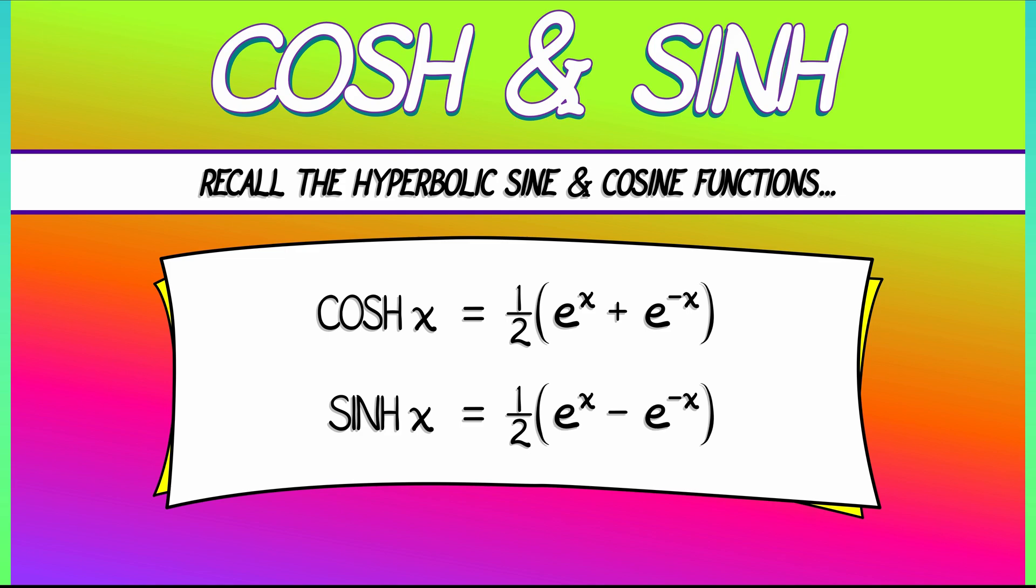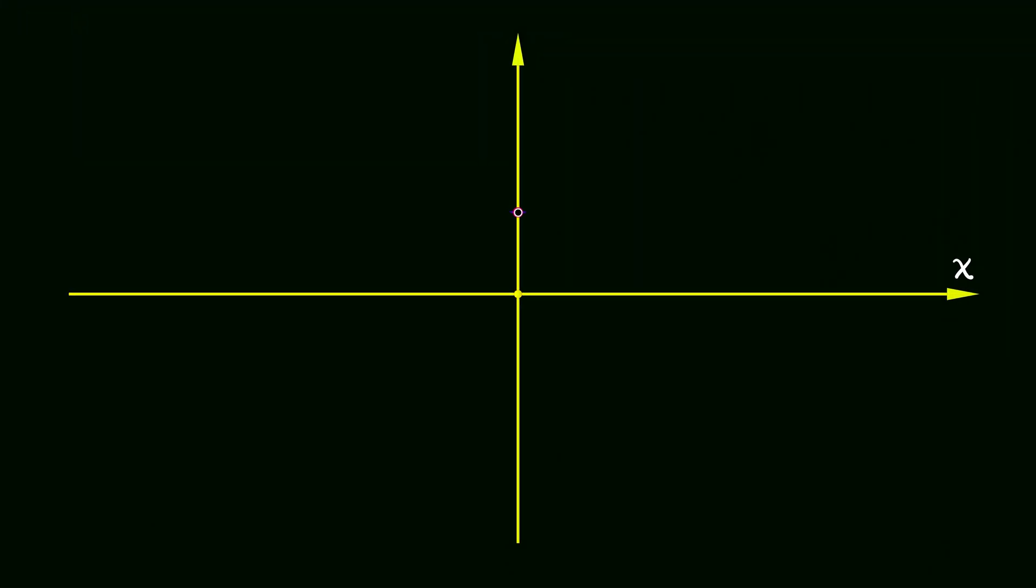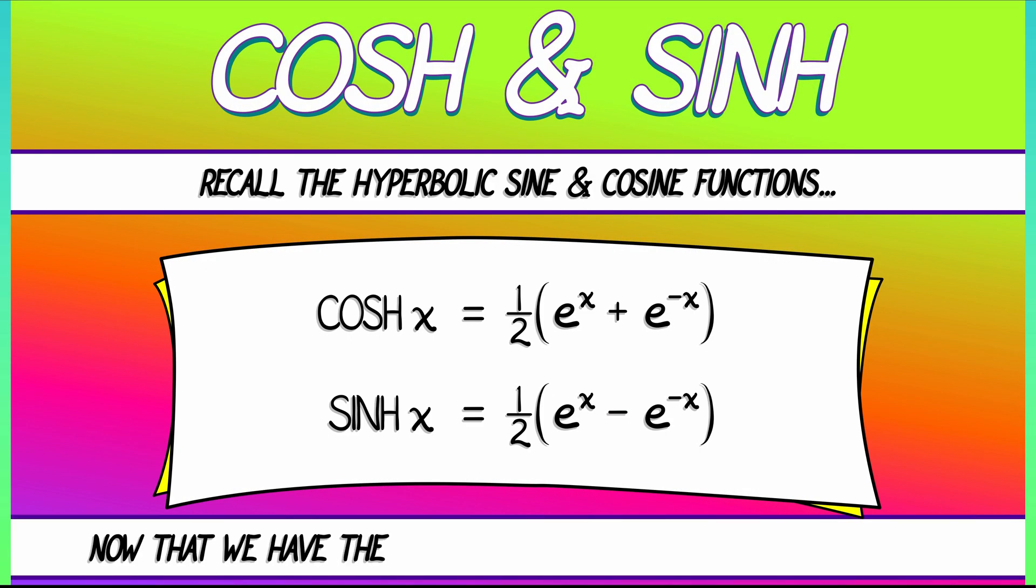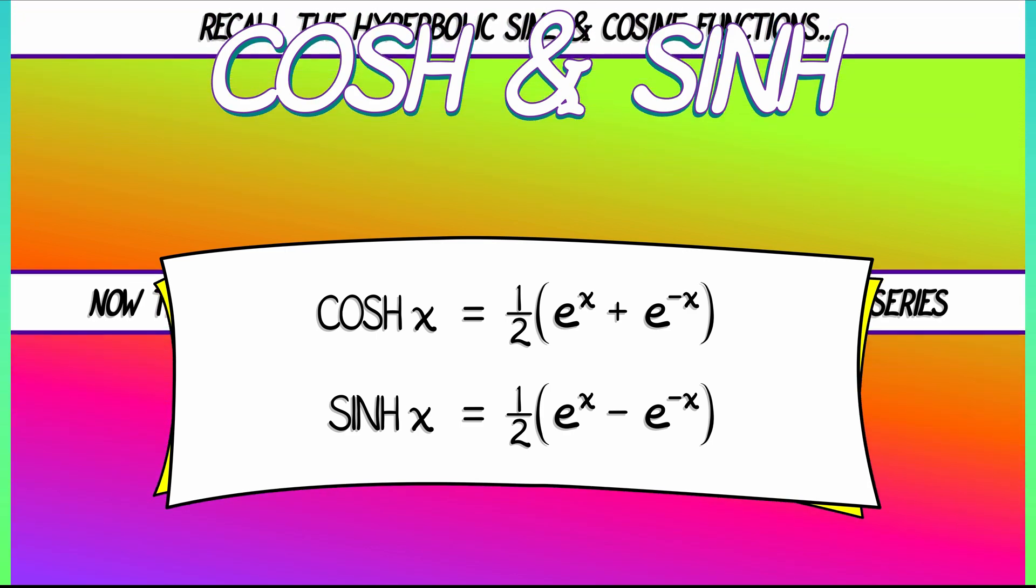Now, it's kind of a mystery at first. Why are these called hyperbolic sine and hyperbolic cosine? These don't look anything like those trig functions. Well, now that we've got the definitions, let's think in terms of Taylor series. How hard is this going to be? This is not going to be so hard.